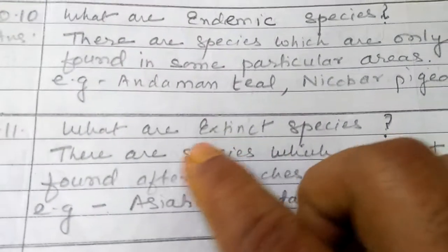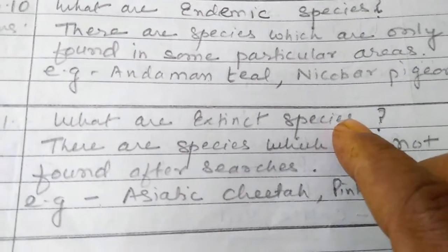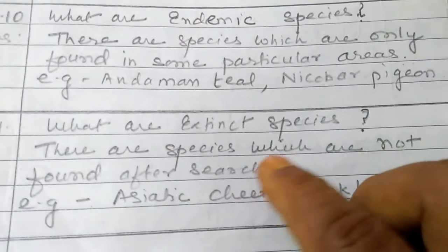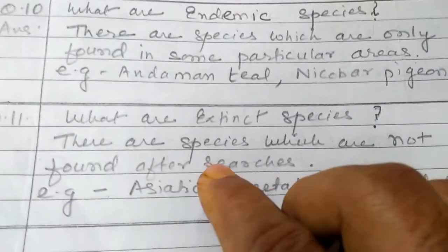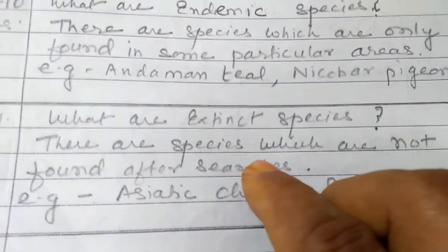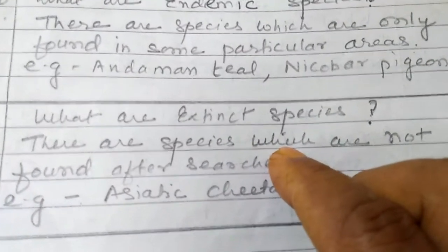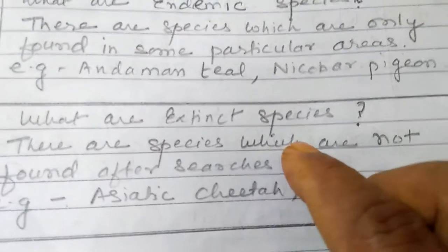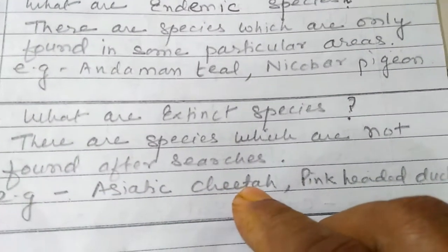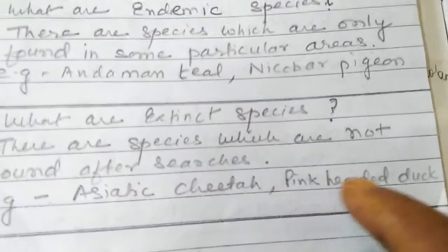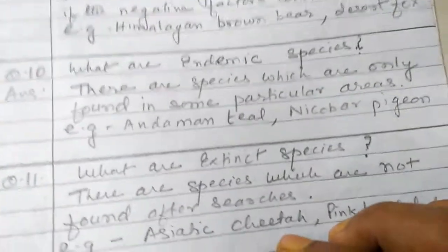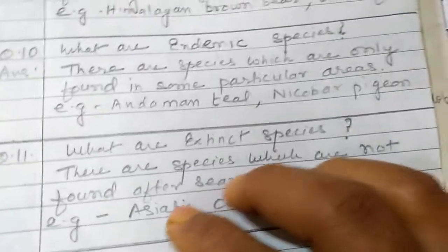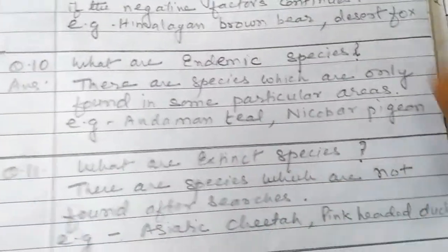Question: What are extinct species? These are species which have not been found after searches for a longer period of time. Examples include the Asiatic cheetah of India and the pink-headed duck, which have not been seen for more than 50 years and have been declared extinct.